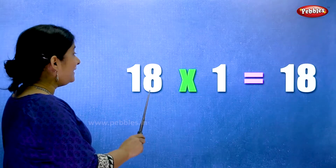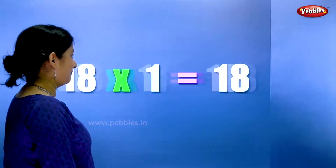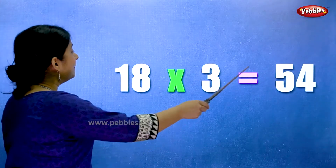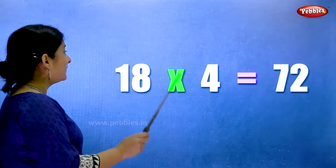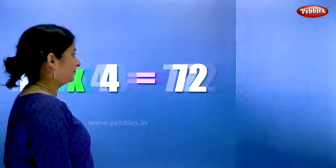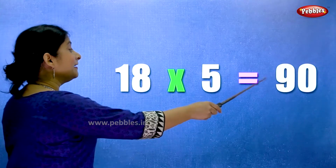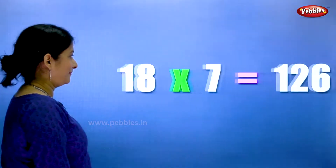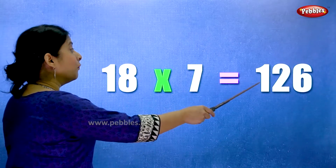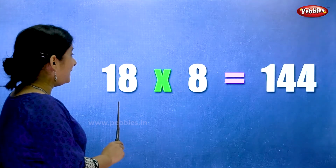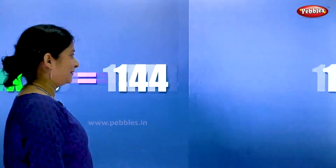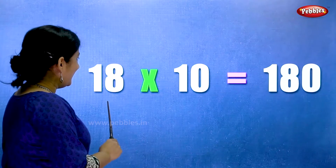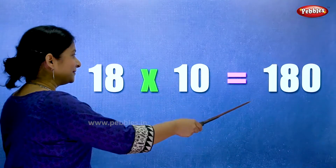18 ones are 18. 18 twos are 36. 18 threes are 54. 18 fours are 72. 18 fives are 90. 18 sixes are 108. 18 sevens are 126. 18 eights are 144. 18 nines are 162. 18 tens are 180. Let's learn the table of 18 one more time.